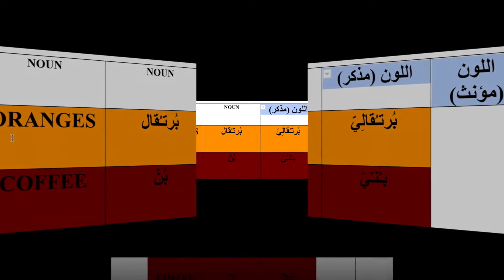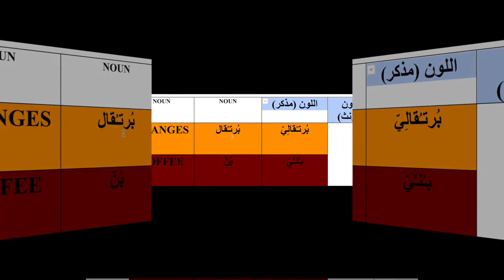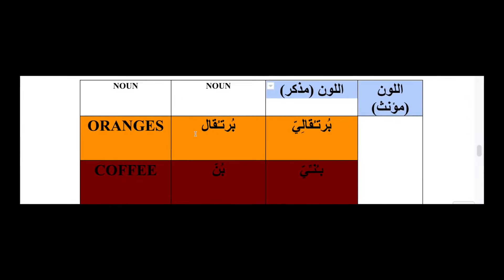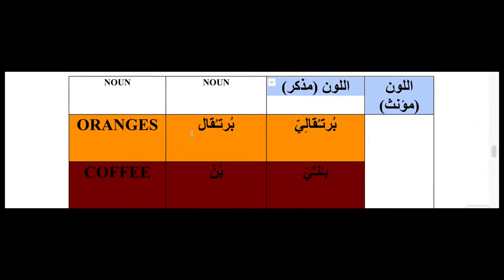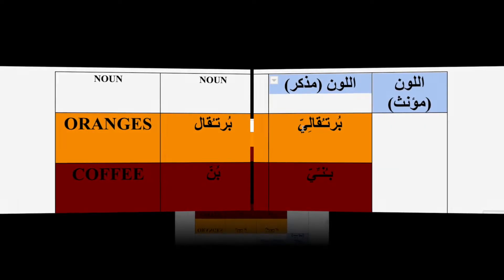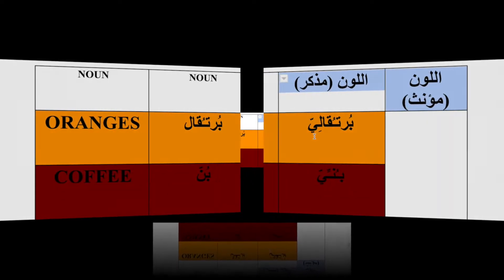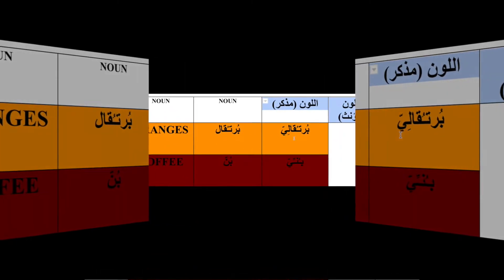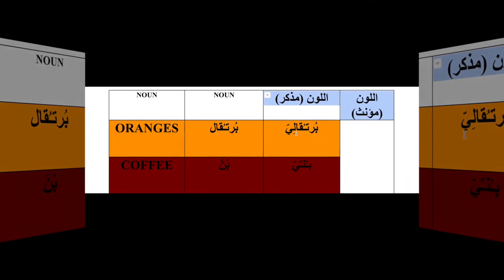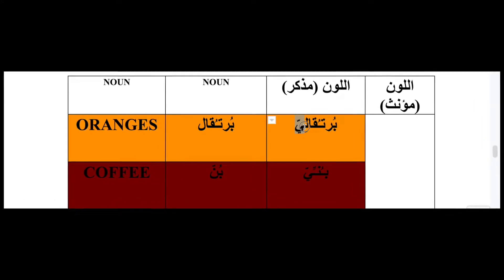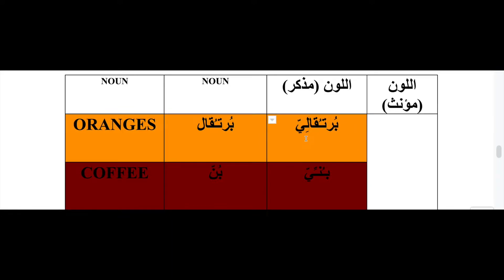For example, oranges are called بورتقال — بورتقال is something in nature. To make the color, we use the adjective form from the word بورتقال. In Arabic, to make an adjective you add a كسره (short 'e' vowel) and a يا with a شده (double يا) at the end. So بورتقال plus كسره and يا with شده becomes بورتقالي, and that's the masculine color.